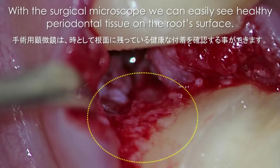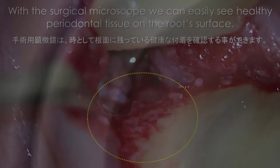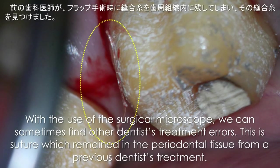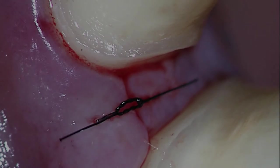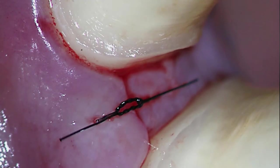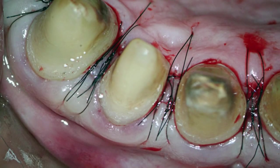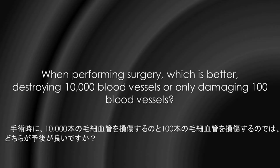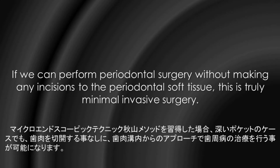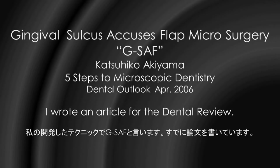With the surgical microscope, we can easily see healthy periodontal tissue on the root surface. With the use of the surgical microscope, we can sometimes find other dentists' treatment errors. When performing surgery — which is very different from destroying 10,000 blood vessels versus only damaging 100 blood vessels — if we can perform periodontal surgery without making any incisions to the periodontal soft tissue, this is truly minimally invasive surgery: gingival sulcus access flap microsurgery.